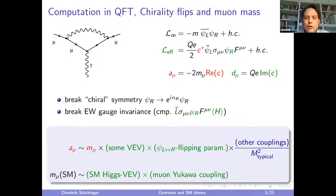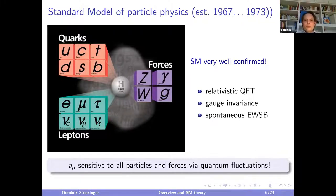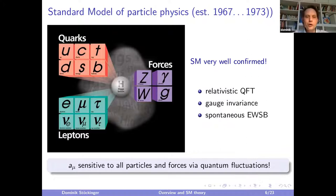The standard model is a deep theory resting on relativistic quantum field theory, gauge invariance, and spontaneous electroweak symmetry breaking. It contains quarks, leptons, gauge bosons, and the Higgs. G-2 of the muon is sensitive to all aspects of the standard model — all particles and all forces — via loop diagrams, i.e., quantum fluctuations.